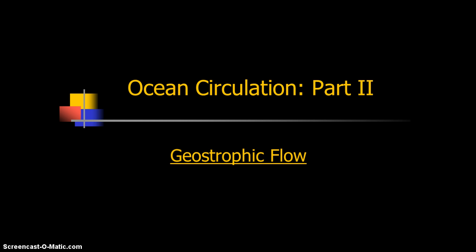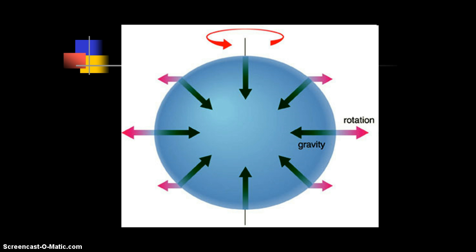The basic premise of geostrophic flow, or the take home that you need to remember, is that it's flow that's caused by the balance between gravity on Earth, or any force of gravity, and Coriolis, which we learned about last lesson. So let's see exactly what I mean.